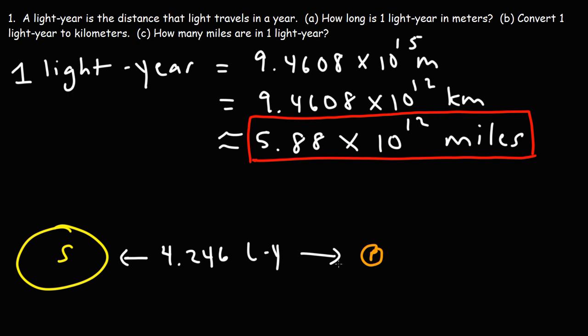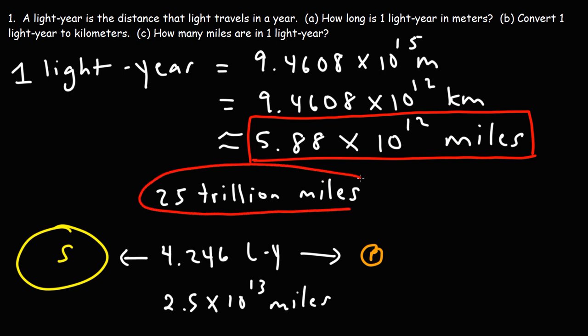If you take that number and multiply it by 5.88 times 10 to the 12th, this will give you approximately 2.5 times 10 to the 13 miles, which is about 25 trillion miles. So that's the approximate distance between our sun and the nearest star, Proxima Centauri. It's about 25 trillion miles apart. But when you're dealing with astronomy, it's easier to describe that in terms of lightyears.